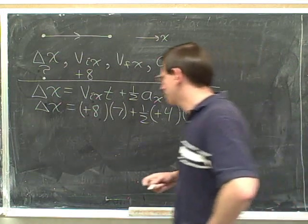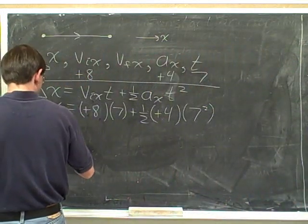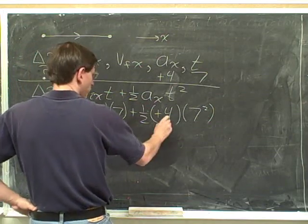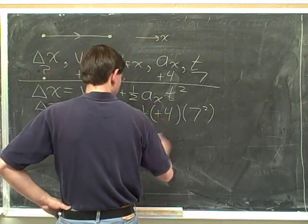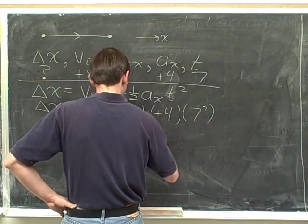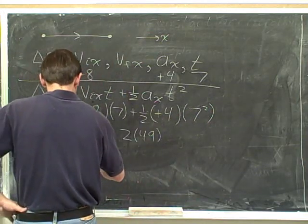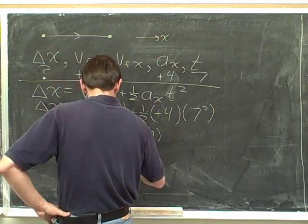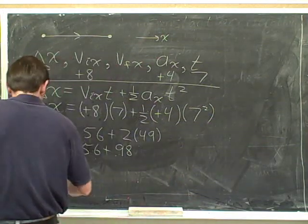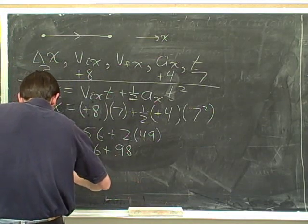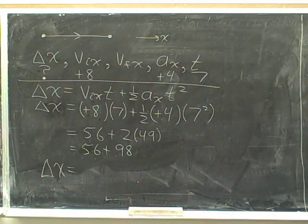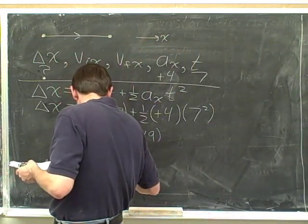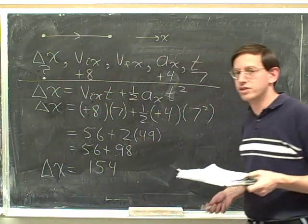Okay. So now let's work this out. So we have delta x equals 56. 1 half times 4 is 2. 7 squared is 49. 2 times 49 is 98. And we end up with delta x equals 154.